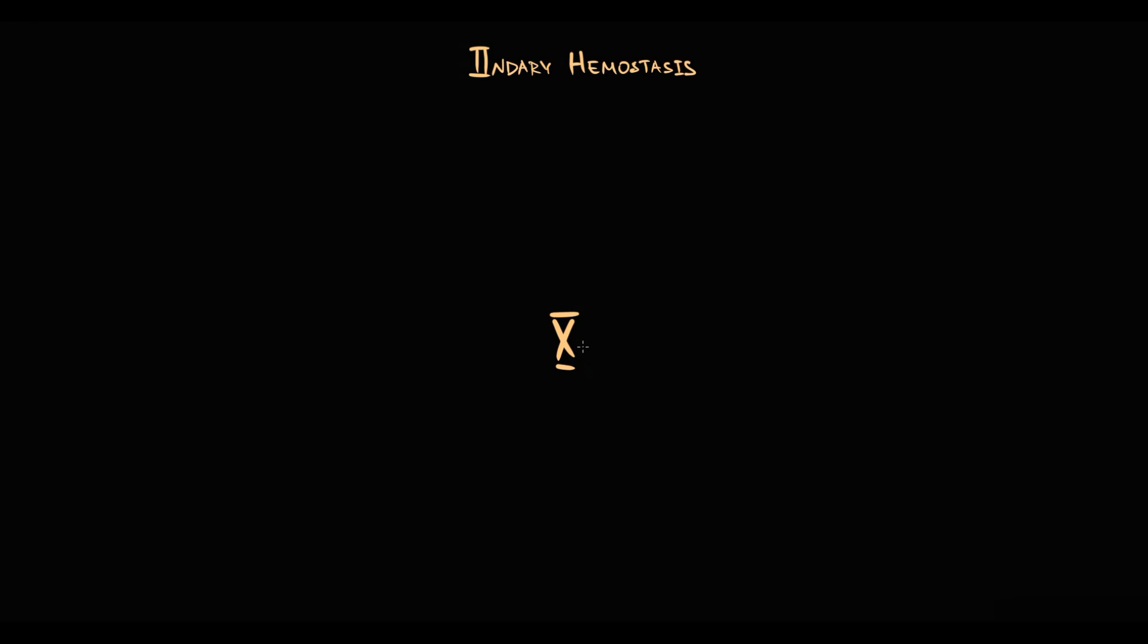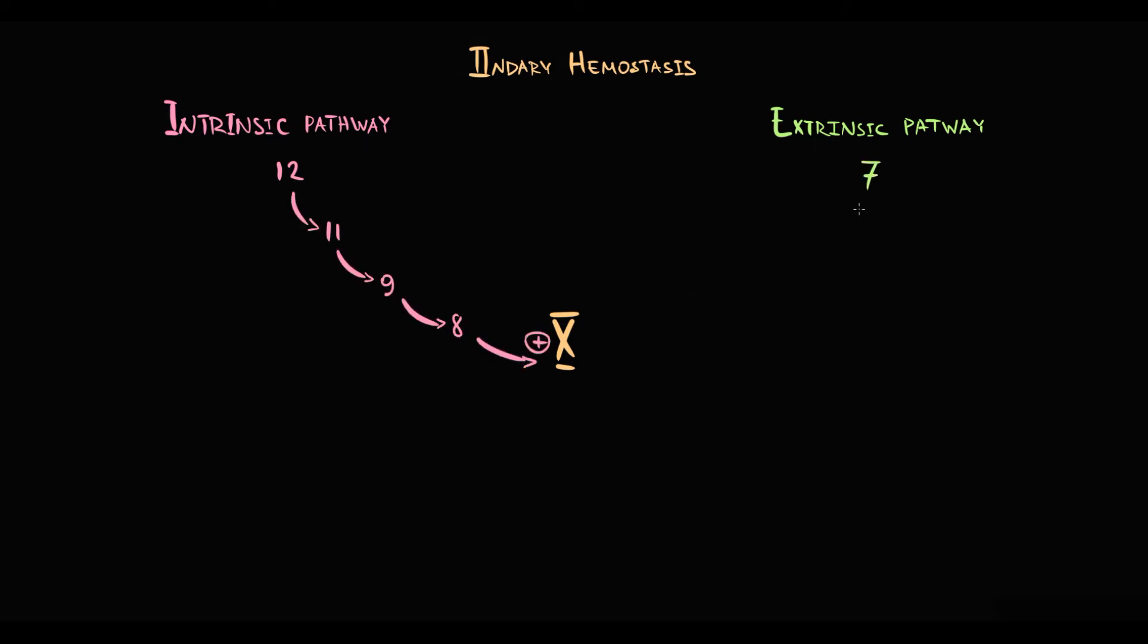Secondary hemostasis is provided by coagulation factors that form coagulation cascade. The central factor of coagulation cascade is factor X. The goal of both intrinsic and extrinsic coagulation pathways is to activate factor X. Intrinsic pathway consists of factors from 12 to 8. Extrinsic pathway consists of just factor 7. Activation of factor X results in activation of factors 5, 2, and 1.